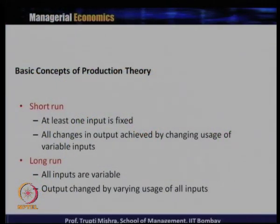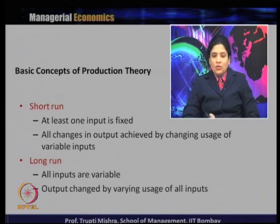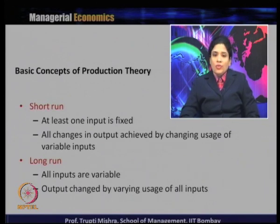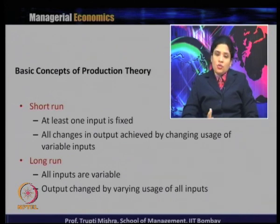One of the important concepts in production theory is the distinction between short run and long run production. In the short run, the time period is shorter and at least one input is fixed — all changes in output are achieved by changing usage of the variable inputs. In the long run, all inputs are variable and output changes by varying usage of all inputs.